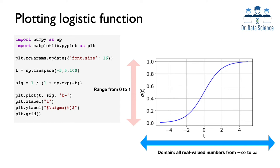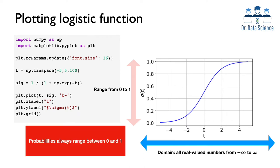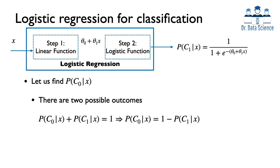The domain of the logistic or sigmoid function is all real numbers from negative infinity to infinity, but the range is always from 0 to 1. This should be familiar from probability and statistics, since probabilities of events are always between 0 and 1. Therefore we can interpret the output of the logistic or sigmoid function as a probability value or probability score, which is why we have the well-known method called logistic regression used for classification.